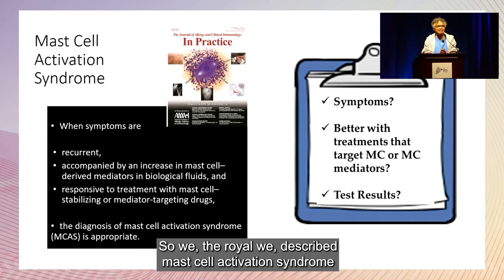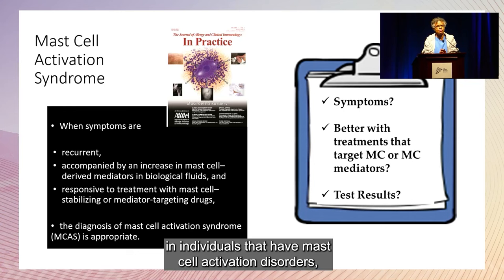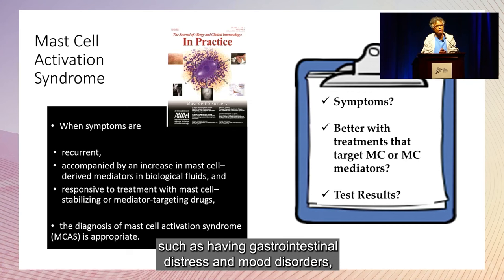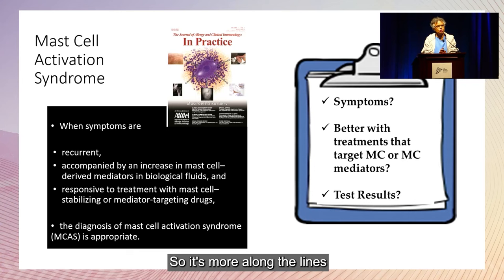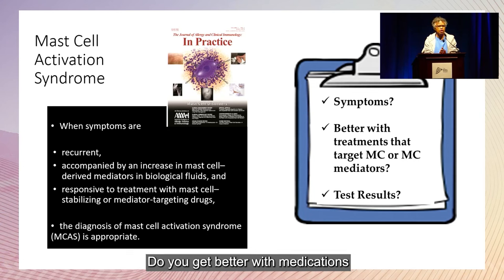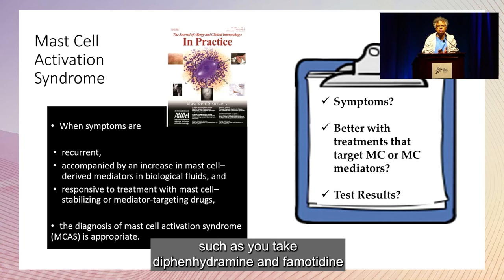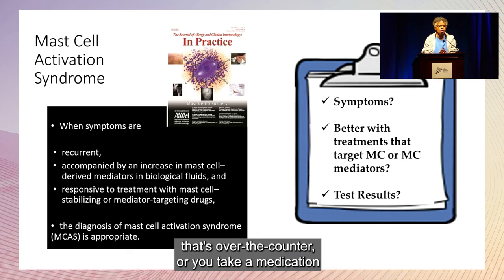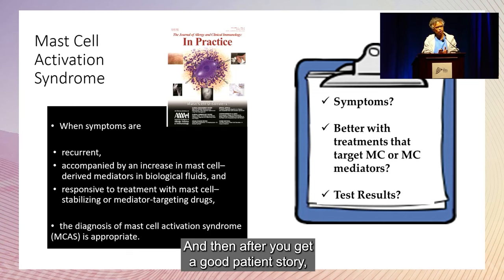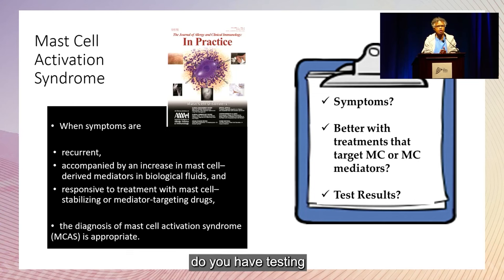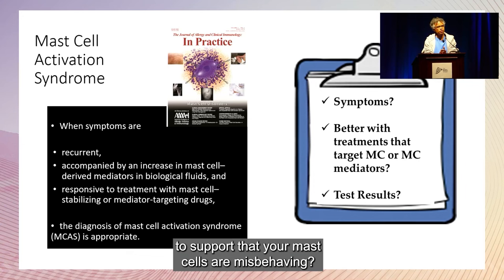Mast cell activation syndrome is described in individuals that have mast cell activation disorders, such as gastrointestinal distress and mood disorders, or skin flushing and joint problems. It's more along the lines of: are you having recurrent symptoms in at least two or more organ systems? Do you get better with medications that target the mast cell compartment, such as diphenhydramine and famotidine over-the-counter? Or medications for asthma and congestion like montelukast? And after getting a good patient story, do you have testing that supports your mast cells are misbehaving?